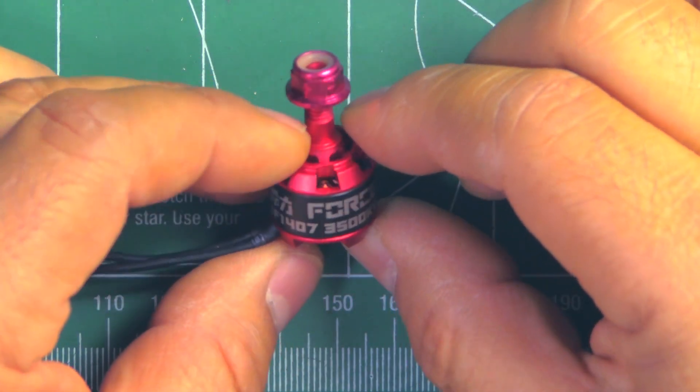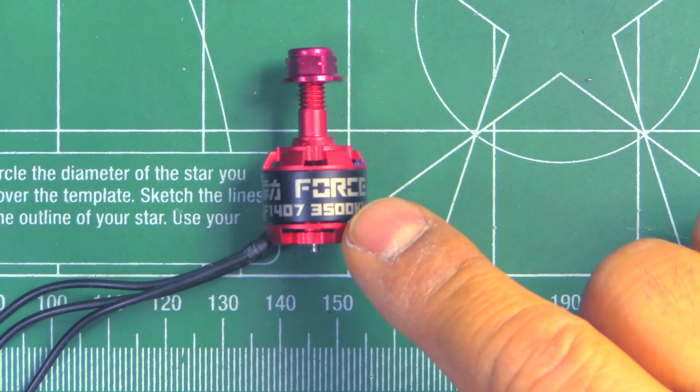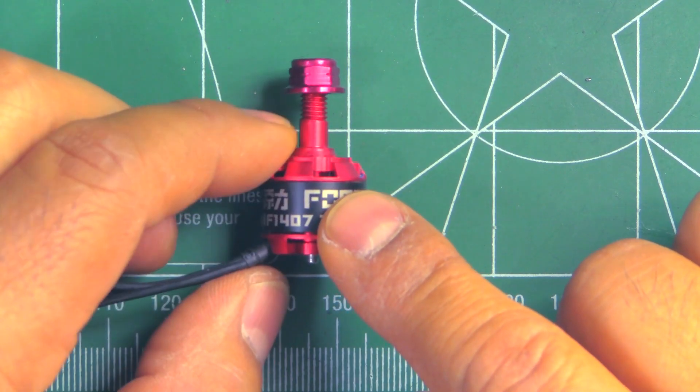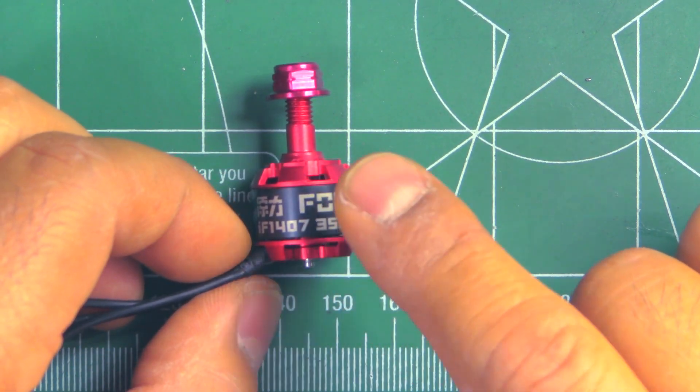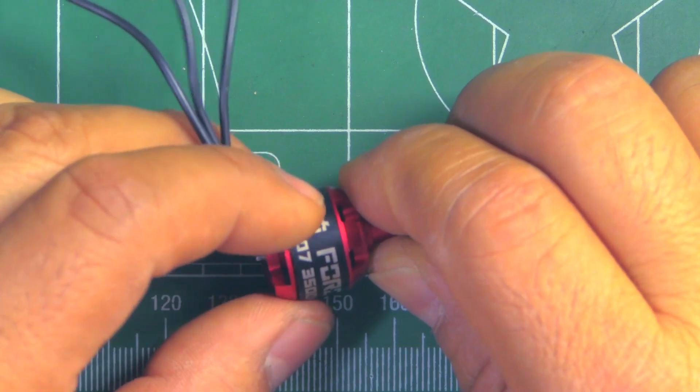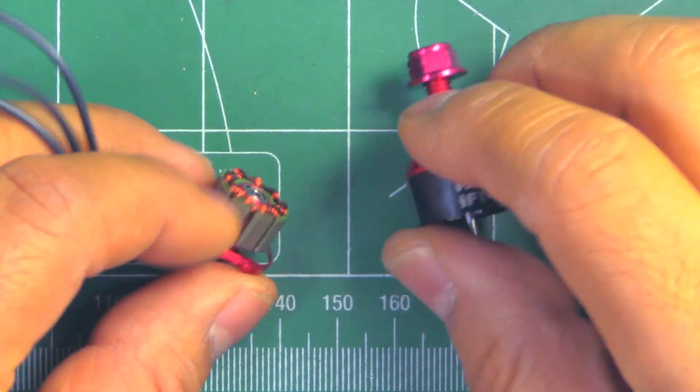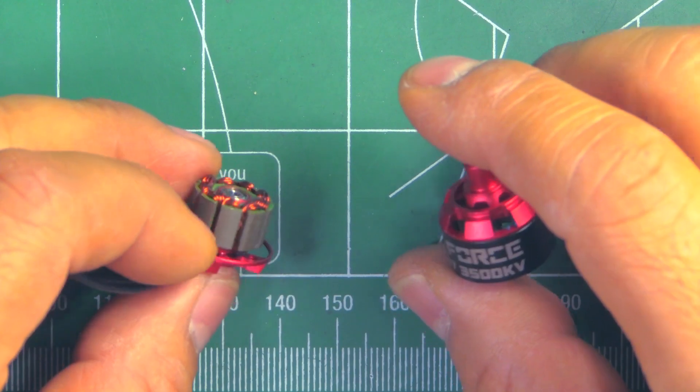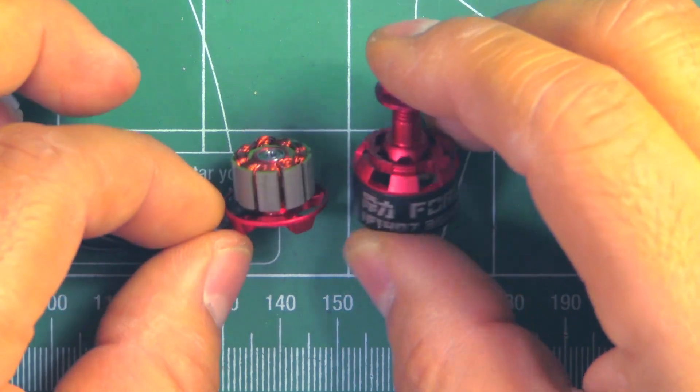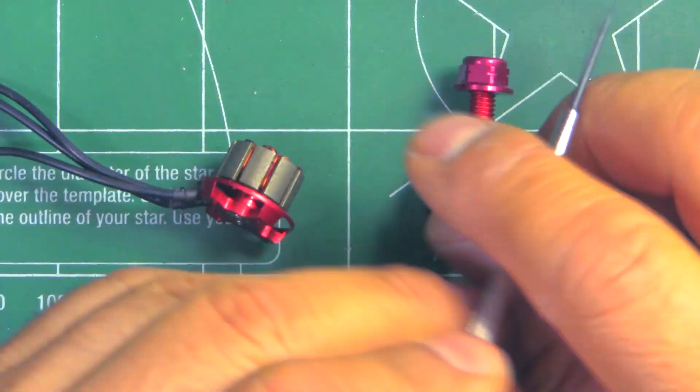So this one's 3500kV, that seems to be the sweet spot for 3 inch props, gives you a good balance between outright top-end RPM and mid-range to low RPM torque and responsiveness, so that seems to work pretty well for the most part. This motor, I guess it would fall under the mid-budget region, so let's see what features it's got.